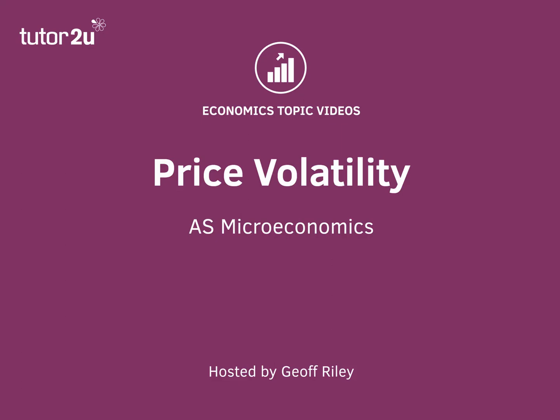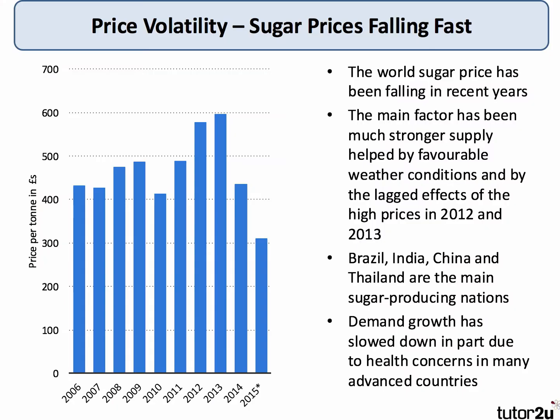Hi there, here's a short video looking at some of the causes of price volatility in markets. We often see the price of commodities — things like sugar, copper, rubber, coffee, and oil — display quite a lot of price volatility from year to year, sometimes from week to week, month to month.